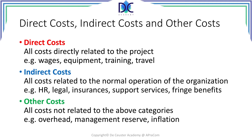Let's start with direct costs, indirect costs, and other. Direct costs are all costs directly related to the project. For example, the wages of the people working on the project, the equipment, training related to the project, and travel specific for the project.